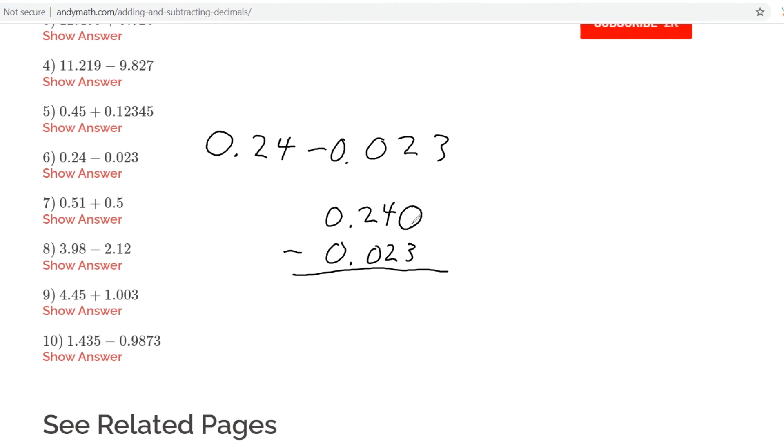Now we do subtraction like we normally would. Can't do 0 minus 3, so we have to borrow which will make this a 10. 10 minus 3 is 7. 3 minus 2 is 1. 2 minus 0 is 2. The decimal is still there and the zero is still there.